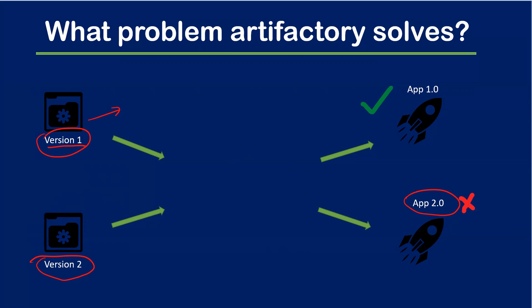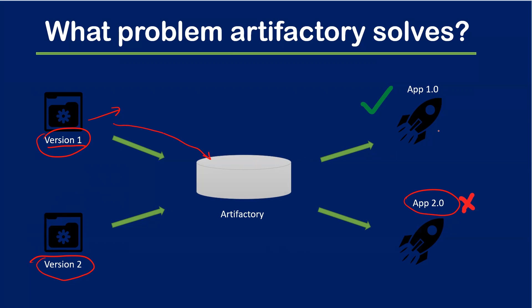Rather than developers spending time on development, they'd end up spending time on these things. But with artifactory, whichever version you want to deploy to an application server or VM is first stored in the artifactory before deploying. So if you deploy version two and it's failing, you don't need to go back to the code. You can just go to artifactory, download the v1 artifact, and deploy it. That's where artifactory plays a very important role in any CI/CD pipeline or development life cycle.